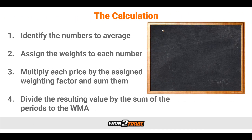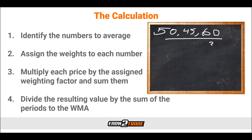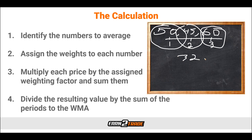Let's use an example where we have a stock — we'll say it's stock XYZ — and for the past three days it traded at $50, $45, and $60. We're going to calculate the weighted moving average based on these numbers. Step one: identify the numbers to average — the $50, $45, and $60 recorded over that three-day period. Step two: assign the weights to each number. Since there are three periods, the most recent day, $60, gets the largest weight of three; the second recent day, $45, receives a weight of two; and the last day, $50, receives a weight of one. Step three: multiply each price by the assigned weighting factor and sum them up. Using the WMA formula, the calculation is 3 × 60, plus 2 × 45, plus 1 × 50, which all equals 320.